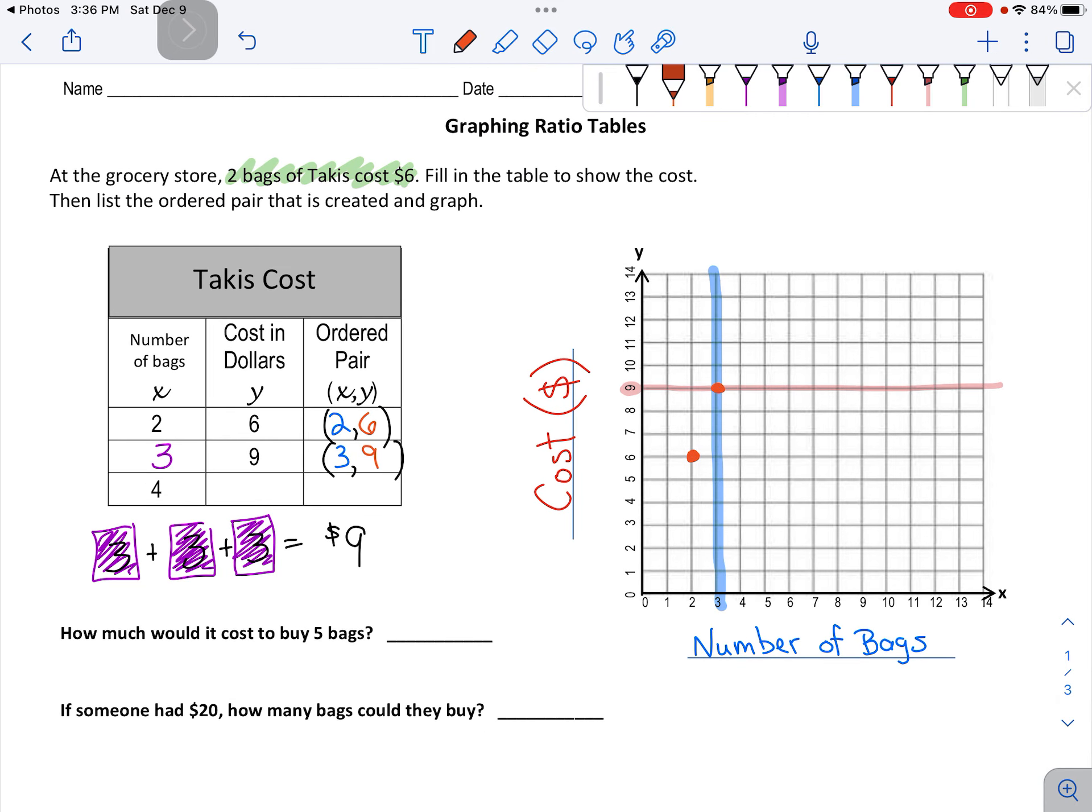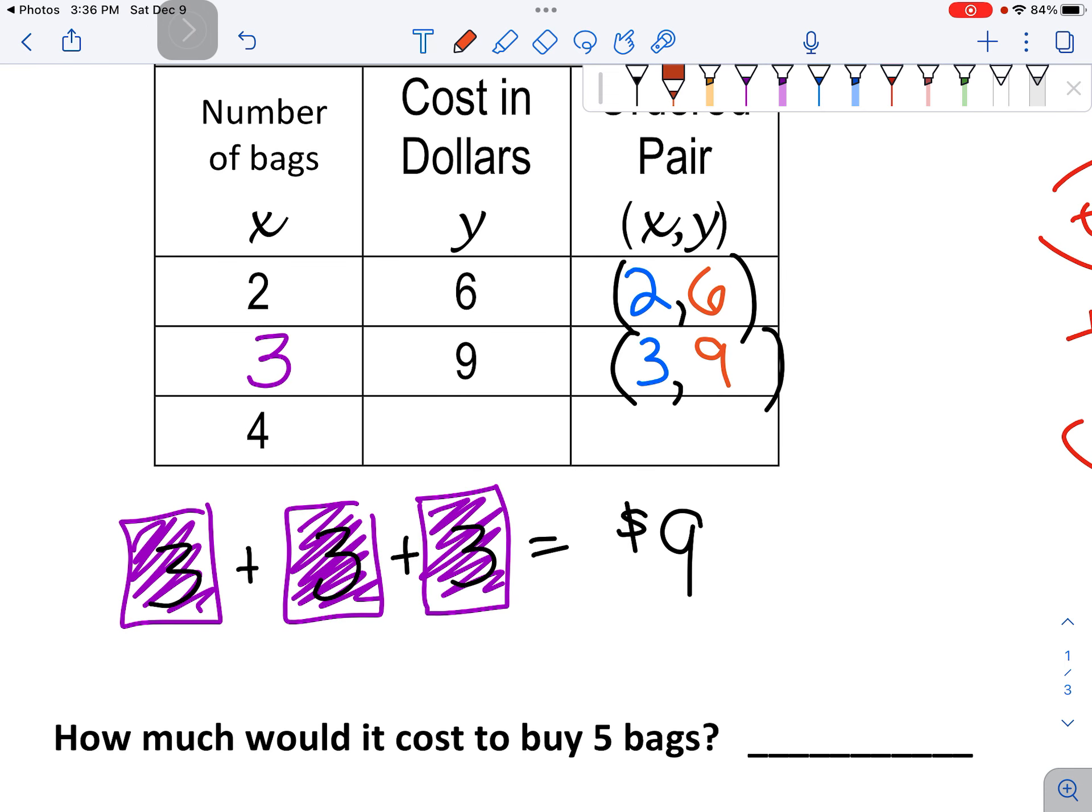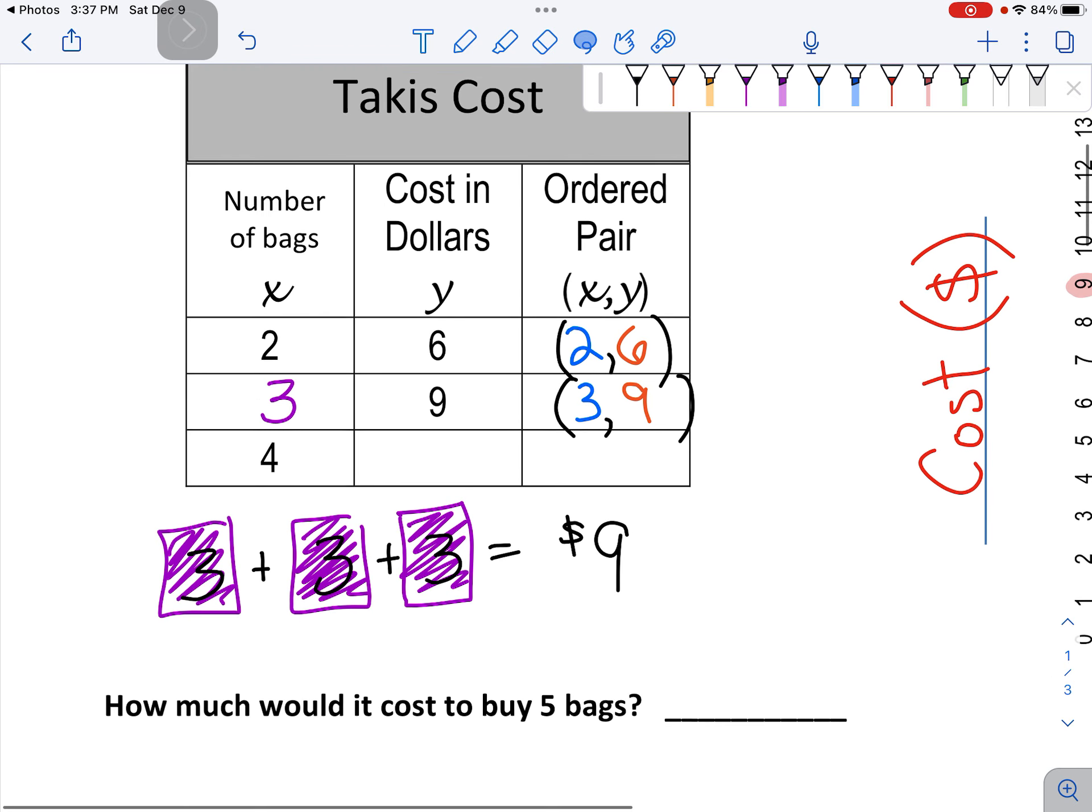And then I need to make one more. So now it says four bags. Okay, well, that's easy enough. Just going to literally copy and paste here. Copy and paste. Four bags, three plus three plus three plus three, or four threes is $12.